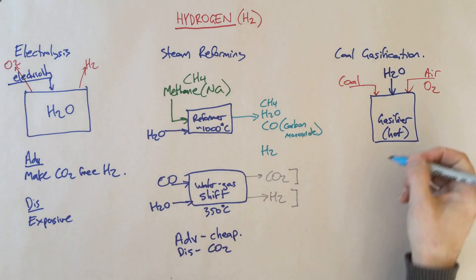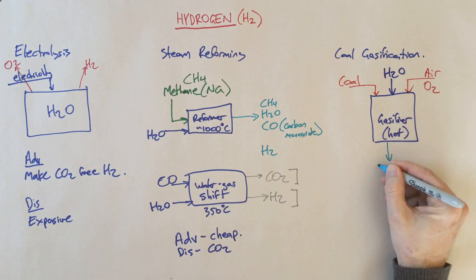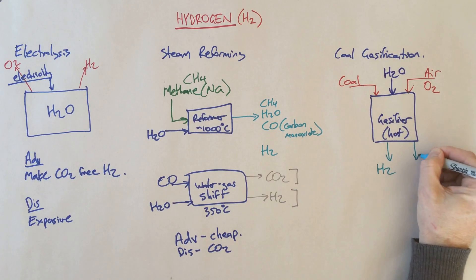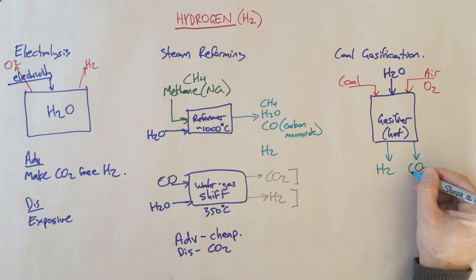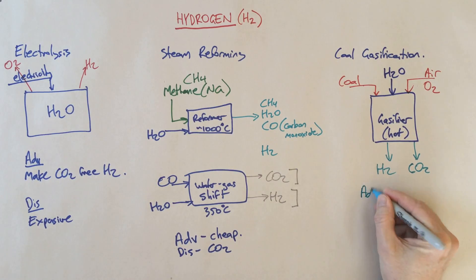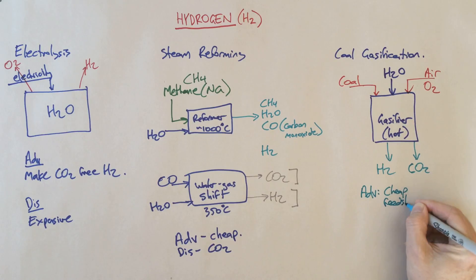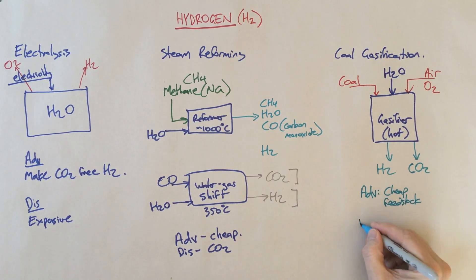What we can get out of there is hydrogen and CO2. We can also get a range of other compounds, some of which are pollutants depending on how the reactor runs. Some advantages: coal is cheap, so it's a cheap feedstock to make hydrogen. Disadvantage: again it makes CO2.